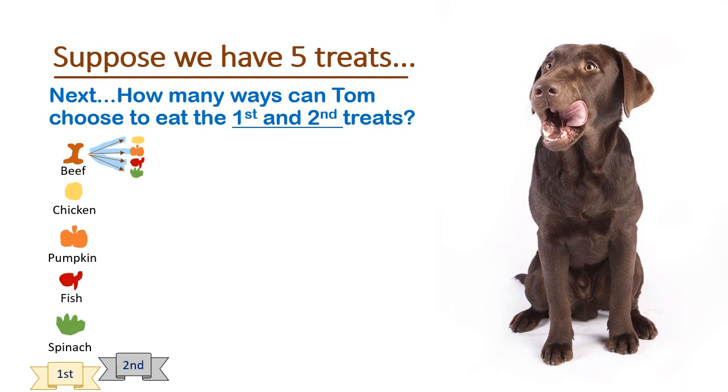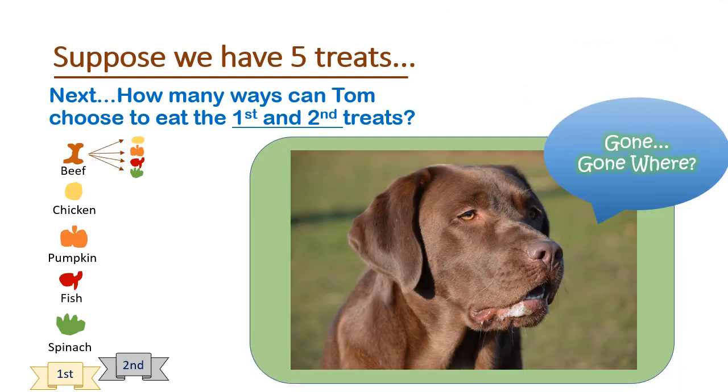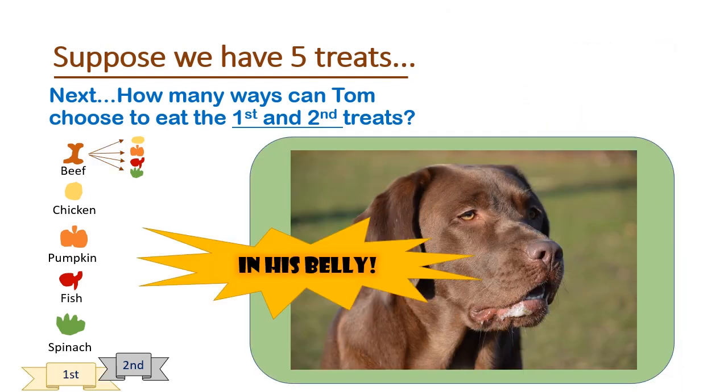Notice that he had five choices for the first treat. Though for his second treat, he only has four choices because one is already gone. Gone? Gone where? In his belly.